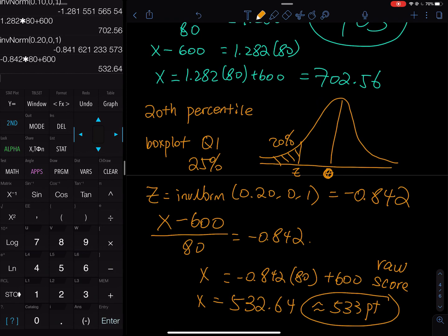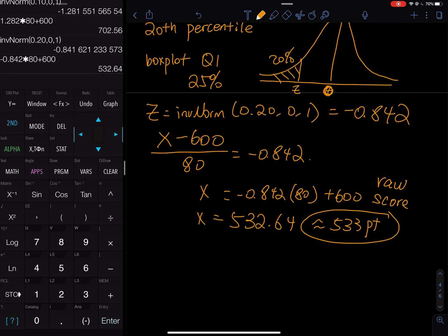What is raw score? Raw score is the actual number you earn on the test. Let's say you take a test, a math test in class. The total is 100, you got 90. Then the 90 is your raw score. That is what you got on paper. So what does that mean? That means if you have 533 points or below, then you are the bottom 20 percent. That doesn't sound nice. If your score is 533 or below, then you're the bottom 20 percent. That's how you do another percentile problem.